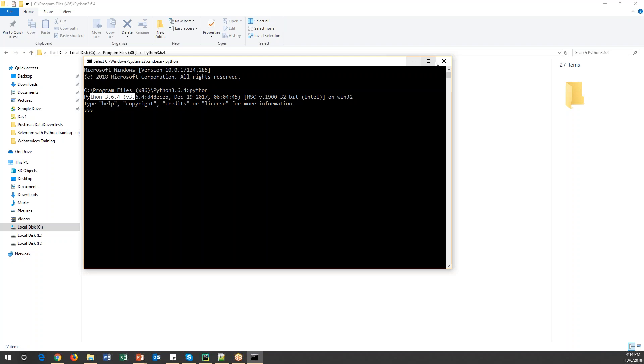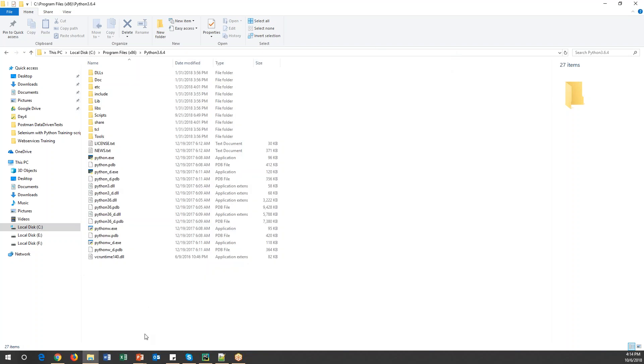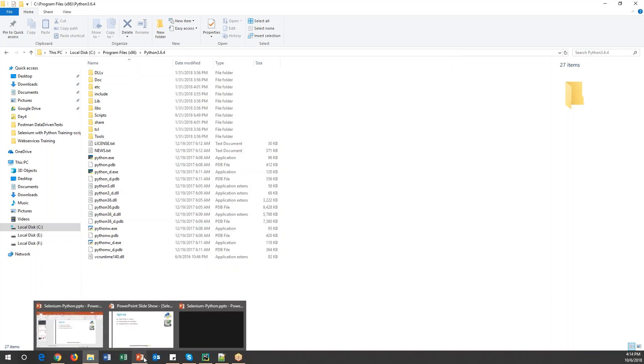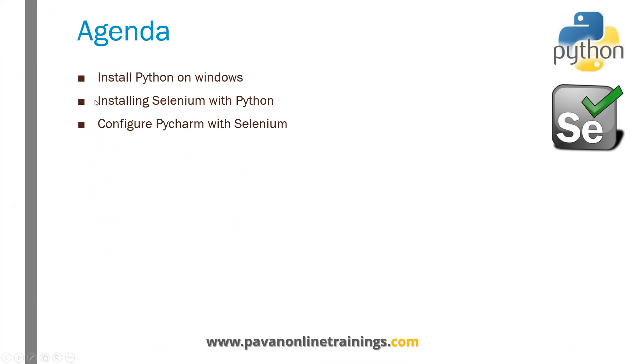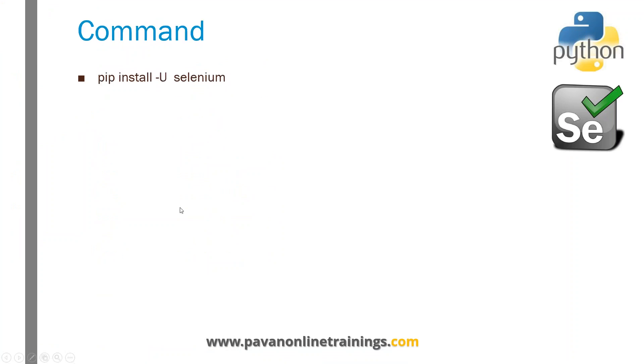Once we have installed Python, the next thing is to install Selenium for Python. To install Selenium for Python, we have a command called 'pip install selenium'.